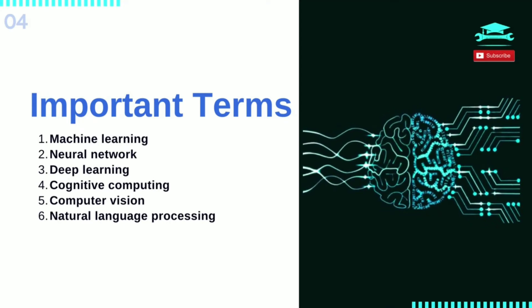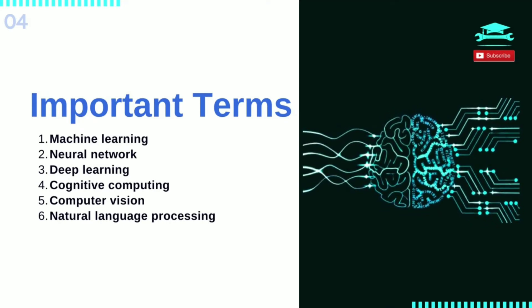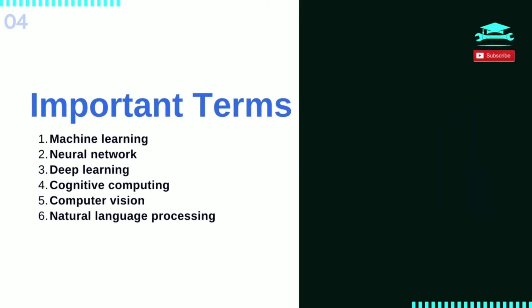Cognitive Computing is a subfield of AI that strives for a natural, human-like interaction with machines. Using AI and cognitive computing, the ultimate goal is for a machine to simulate human processes through the ability to interpret images and speech, and then speak coherently in response.